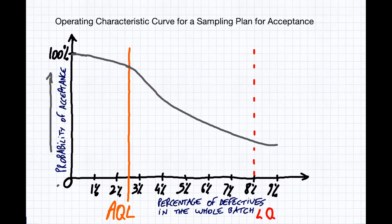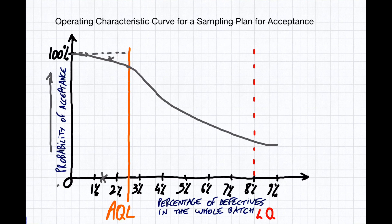You will see that there's a risk that a batch with, say, 1.5% defects might actually end up being rejected — it's above the curve, it's rejected — even though the percentage of defectives is low. This is the producer's risk.